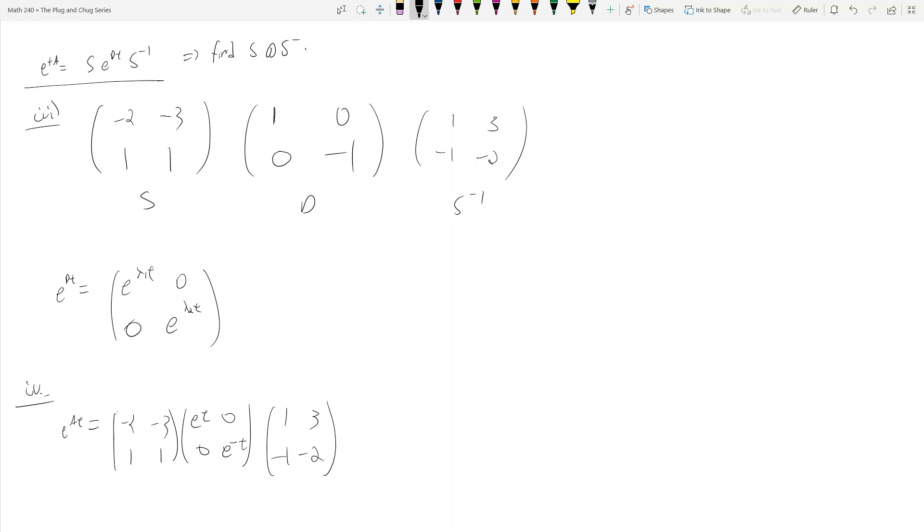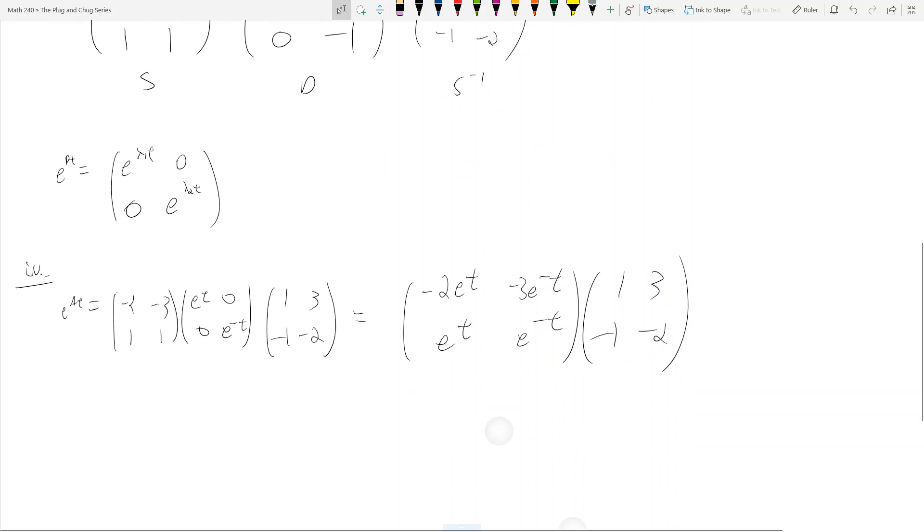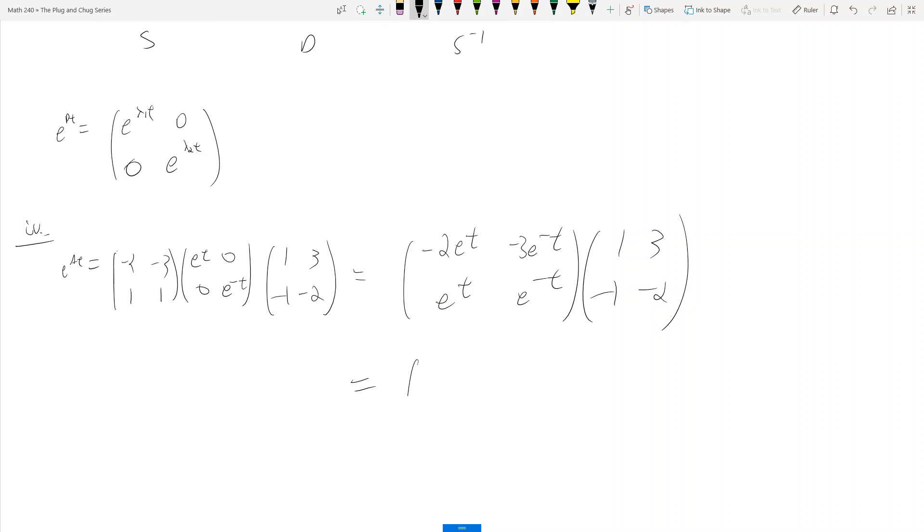For some matrices on some exams you don't have to multiply this out. For 2×2s, almost universally, you're going to have to multiply all these out. If we multiply this out, we get (-2e^t, -3e^(-t); e^t, e^(-t)) times (1, 3; -1, -2). That was multiplying the first two matrices together, and then multiplying that result by S inverse, we get (-2e^t + 3e^(-t), -6e^t + 6e^(-t); e^t - e^(-t), 3e^t - 2e^(-t)). And there we go. We have our matrix exponential.